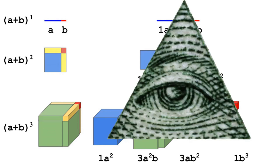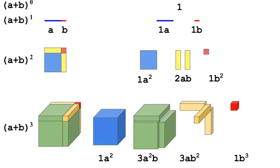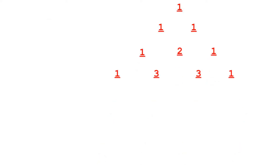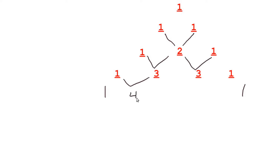It looks like something's missing from this pattern — we forgot (a plus b) to the 0, which we know is 1. This looks like a pattern we've seen before. Looking at just the coefficients, we can see that each number in the triangle equals the sum of the two numbers above it: 1 plus 1 gives 2, 1 plus 2 gives 3, 2 plus 1 gives 3. Continuing with 1s on the outside, the next row is 1, 4, 6, 4, 1. This is called Pascal's triangle. Does the pattern continue when we multiply polynomials?